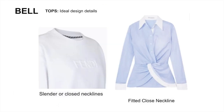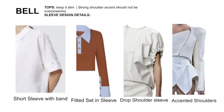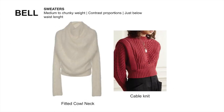For tops, the key design features are closed necklines and a fit around the body. Here are some examples of closed necklines. For sleeves, keep it slim and not overpowering. These are examples of tops to look out for in the bell. For sweaters, go with medium to chunky weight and contrast the proportion to knit weight.